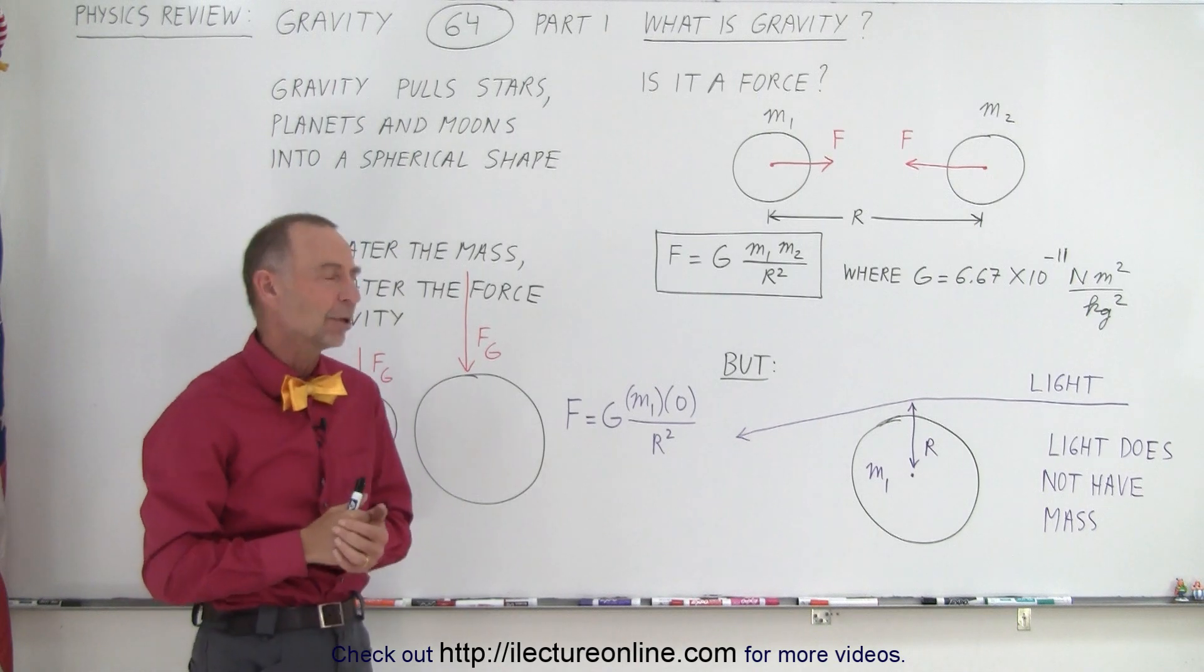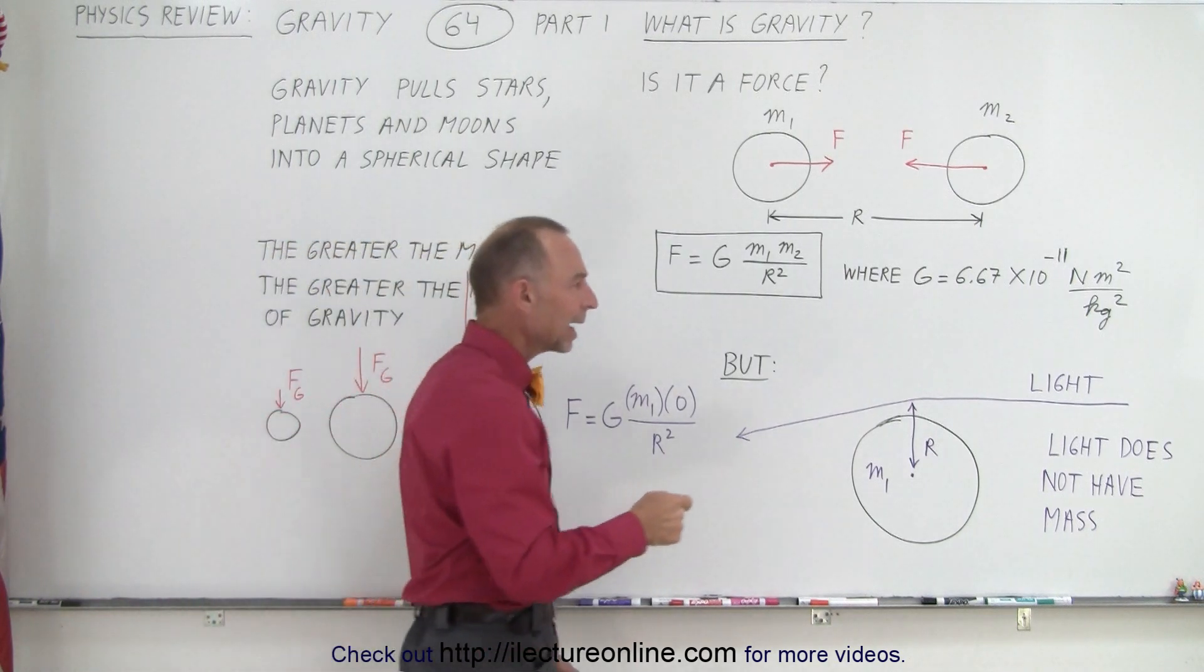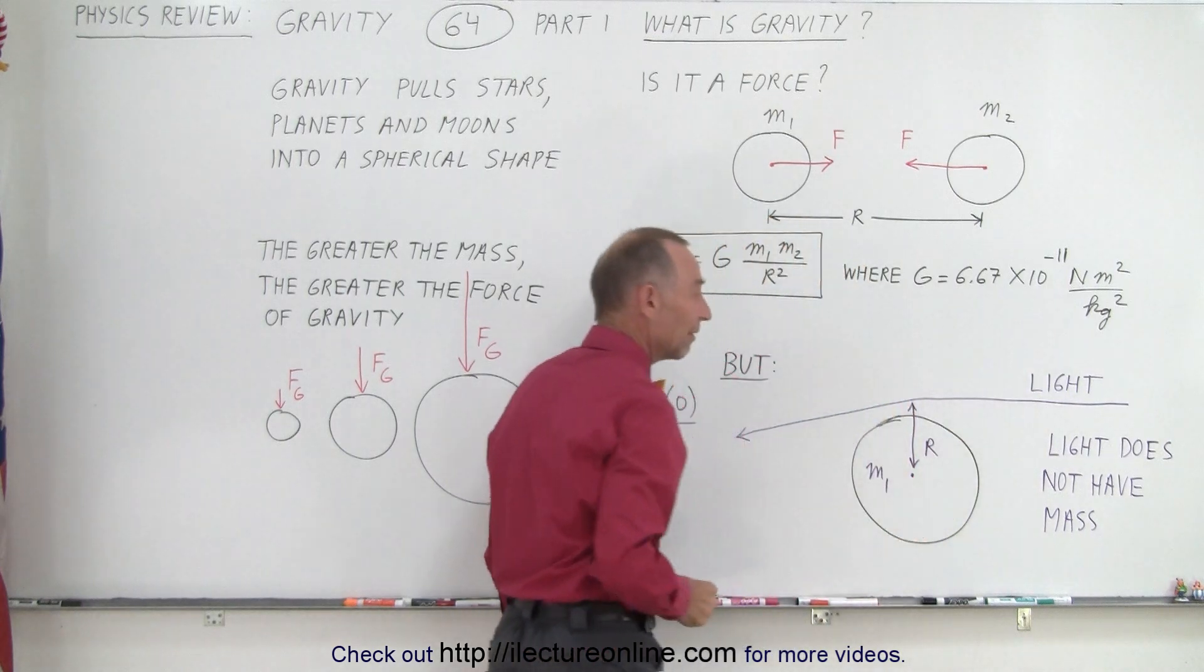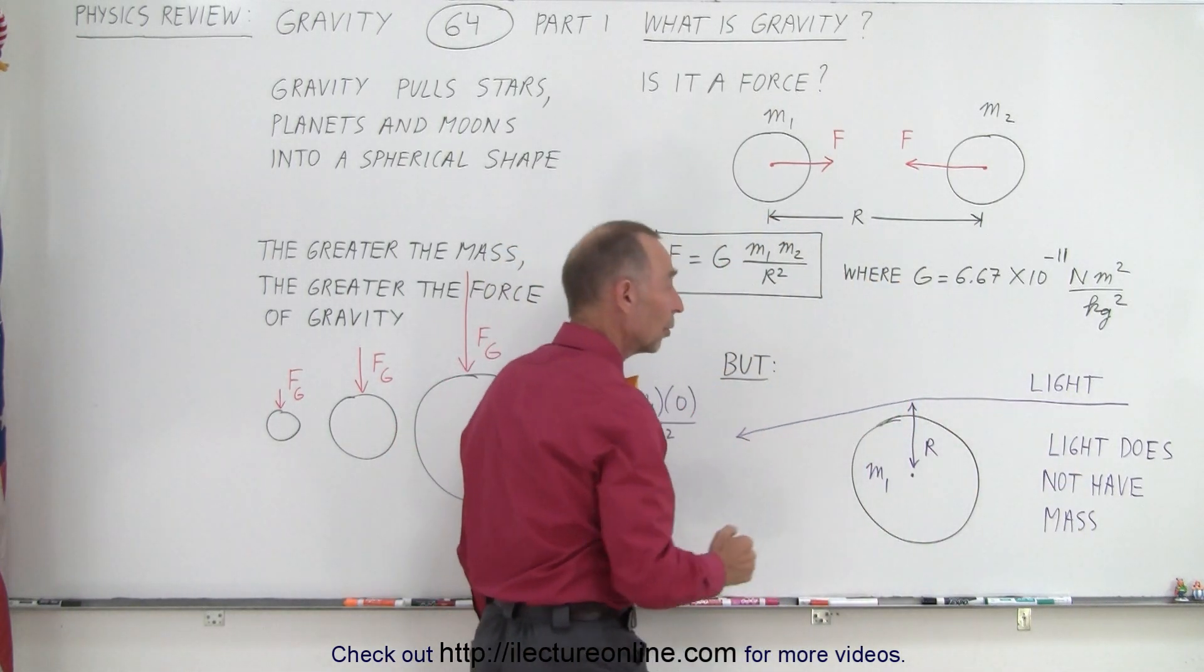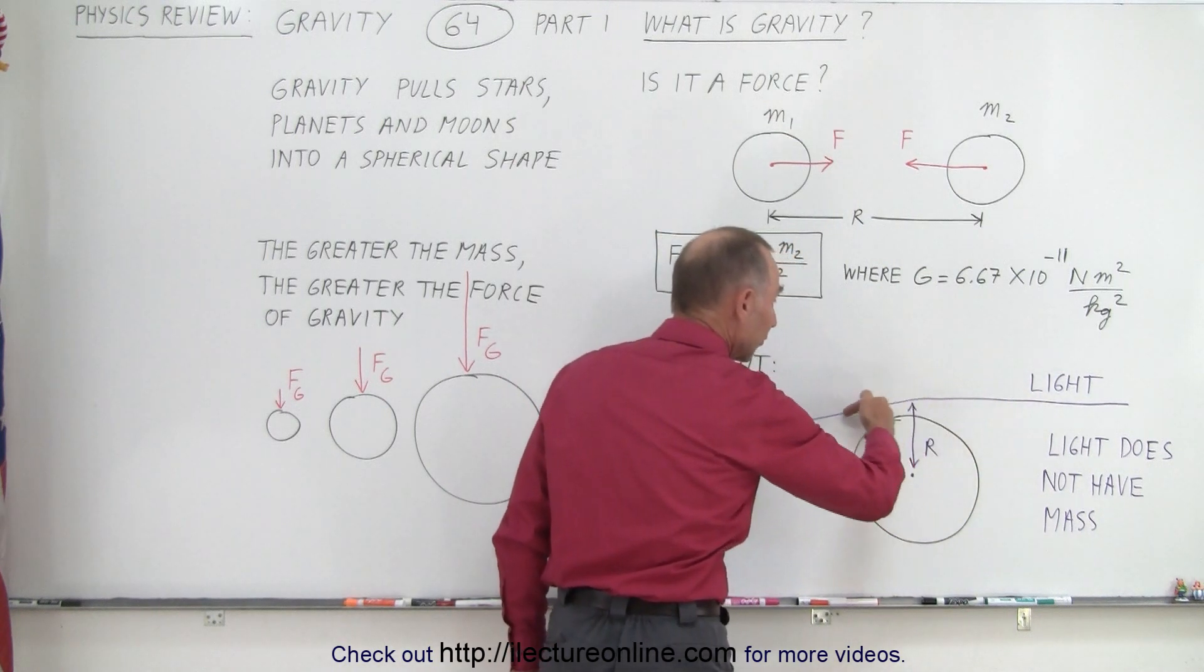But then Einstein came along and he claimed that light is also affected by gravity. But we know that light does not have mass. So how can light be affected by gravity?